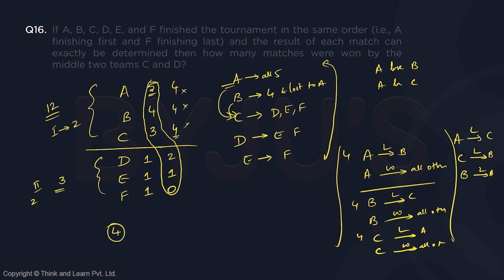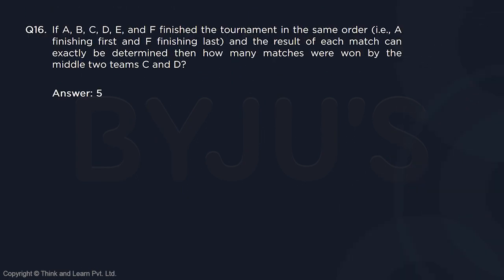We are talking about the possibility of 5, 4, 3, 2, 1, 0. In such a case you can exactly say who is playing where. So the middle two — C with 3 points and D with 2 points — are playing 3 + 2 = 5 matches won in total. That is the answer to question 16.